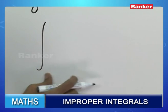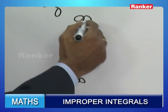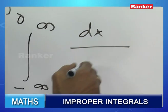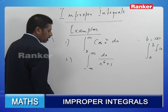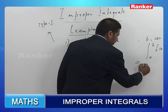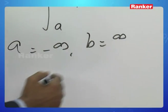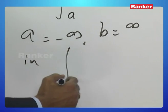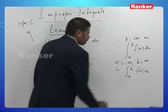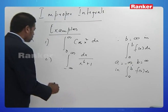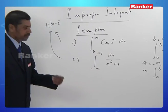Next, we have ∫ from minus infinity to infinity of dx/(x⁶ + 1). Here, a is minus infinity and b is plus infinity in ∫a to b f(x) dx, so this is also a Type 1 improper integral.